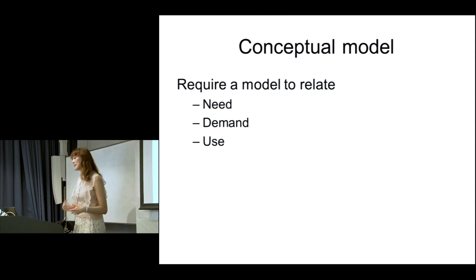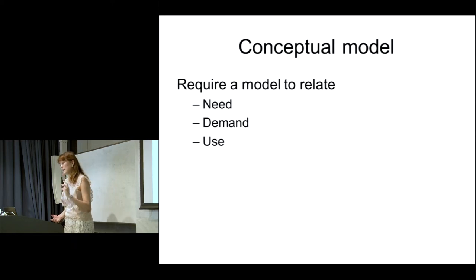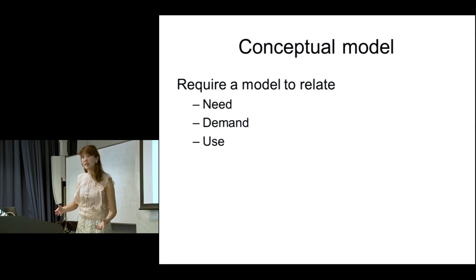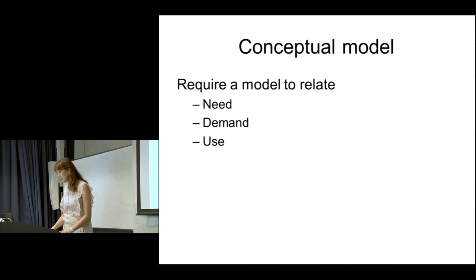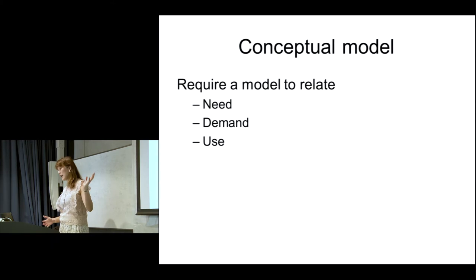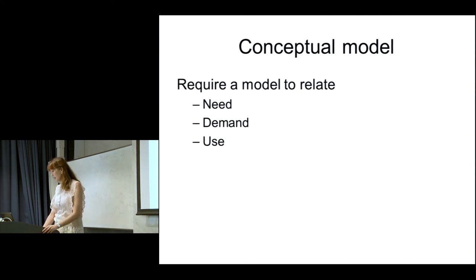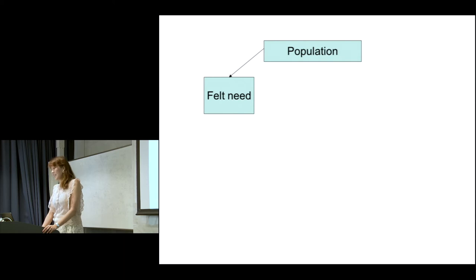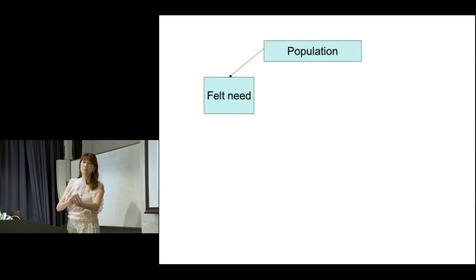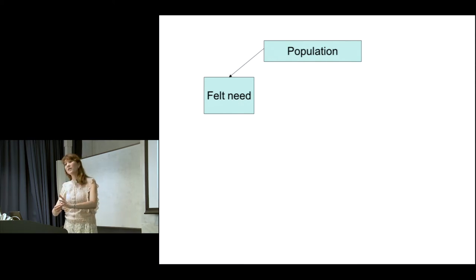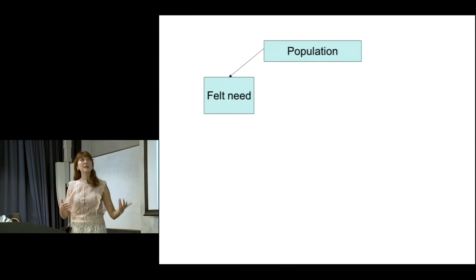You might know all three words — need, demand, use — but it's actually not as obvious as you think. It's crucial to the heart of health service delivery to understand what each of these are and the interrelationship between them. So this morning we'll take an overview of how to think about each of these and how the model relates them all. The first model: we have a population — a group of people in a country — and if you magnify it, it could be you or me.